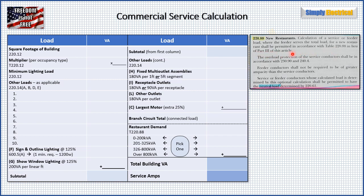What it's telling us is we're not going to use part three — remember, that's where we go for our demand factors, mainly for feeders and services. Instead, we're going to stick with part two, which covers branch circuits. We're just going to add up all of our branch circuits, and then once we get them all added up, we apply our total to table 220.88 with the demand factor we find there.